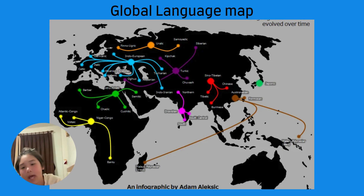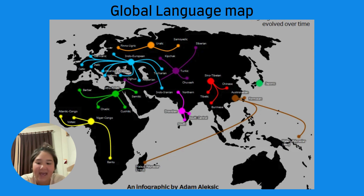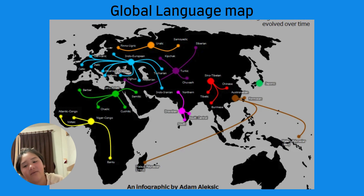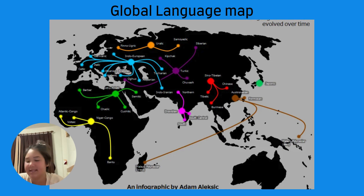French started as the language of the Romans, morphed into Old French after some Gauls got their hands on it, and by the time of the French Revolution it had settled into the language we know today. But French didn't stop in France. Thanks to colonization and global expansion, French made its way to places like Canada — specifically Quebec — where people still speak French today, but with a twist. It's like French went to Canada, froze in the cold, and decided to stay forever.